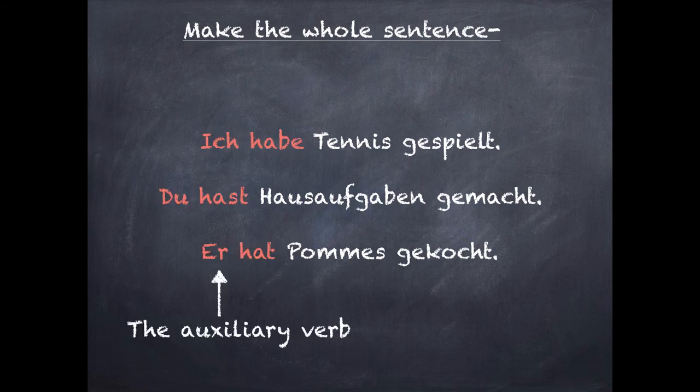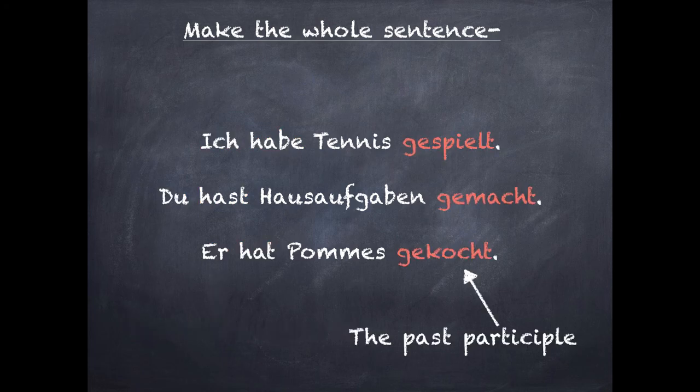As you can see, haben is what we call the auxiliary verb — the most important verb. So: ich habe, du hast, er/sie hat, wir haben. And then at the end you've got the past participle. Notice that the past participle goes right at the end of the sentence — so tennis, Hausaufgaben, and Pommes sit in the middle, while gemacht, gekocht, and gespielt go at the end.